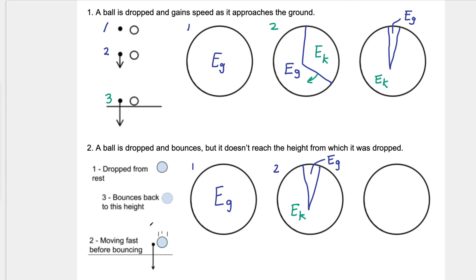After it makes impact with the ground and bounces, from experience we know it never bounces back to the same height — so we have to account for that in terms of gravitational potential energy, kinetic energy, and dissipated energy. The ball has bounced back to a height a little more than halfway, so the gravitational PE piece is a little more than half the pie. Since the ball has come to rest momentarily at that height, there's no kinetic energy — and the rest of the energy went to dissipated energy.